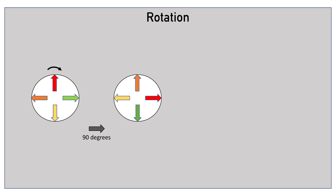Rotating the circular object by 90 degrees clockwise transforms the object as illustrated. The red arrow that was pointing upward originally is pointing towards right after a 90-degree rotation. The yellow arrow that was pointing downward originally is pointing left.